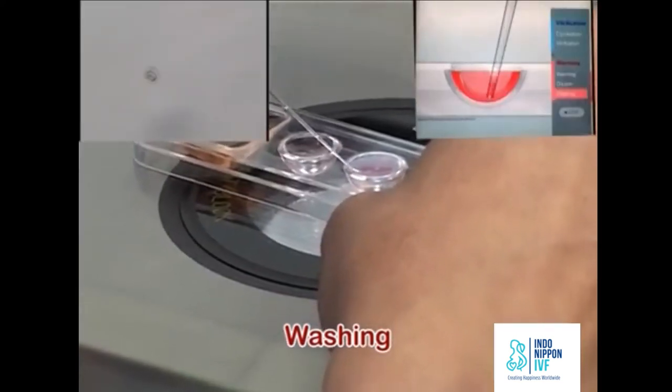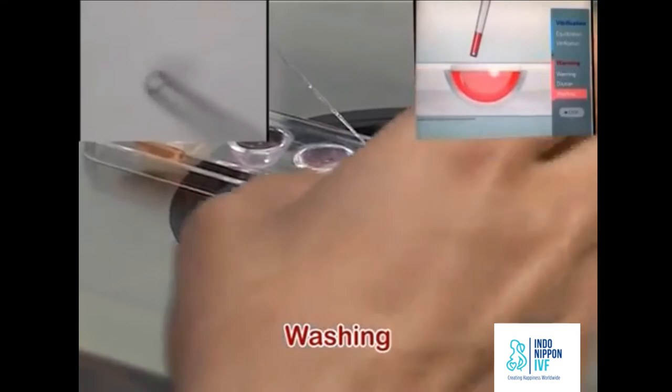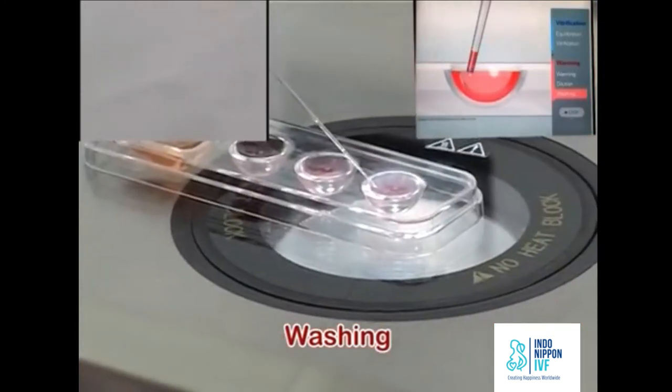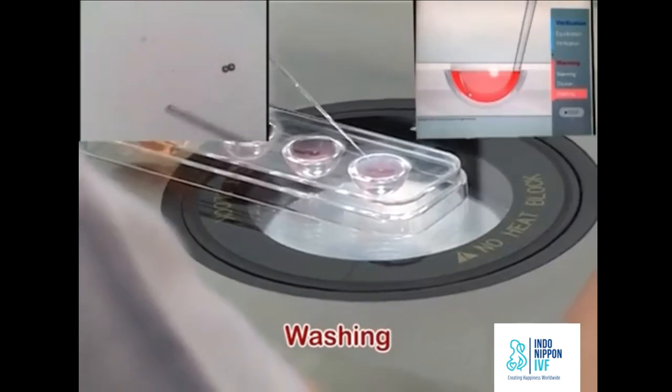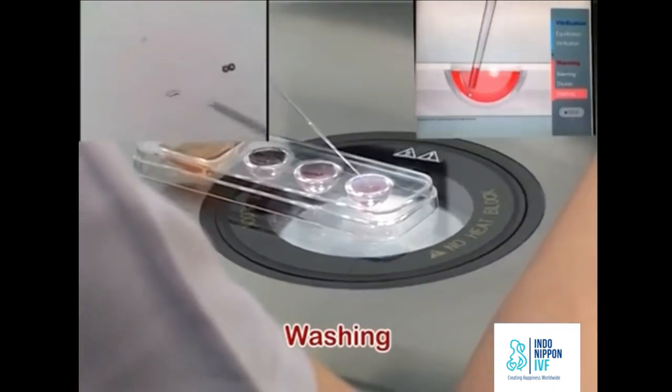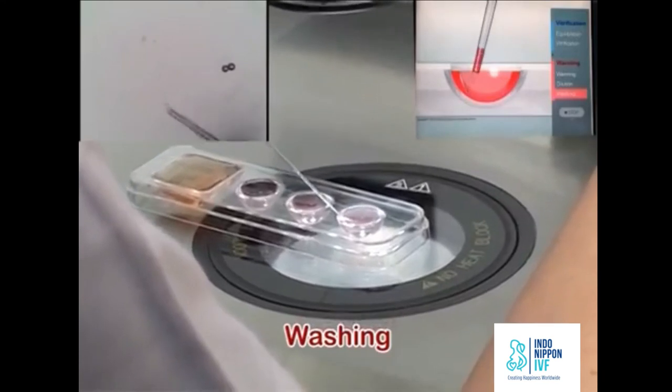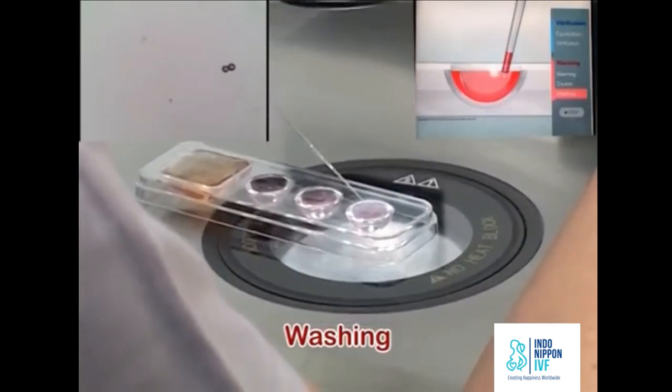Aspirate the oocyte with minimum volume of WS1. Put the oocyte on the surface of the WS2 well. It will free fall to the bottom of the well. Pick up the oocyte from the bottom and let it again free fall from the surface of WS2 well to the bottom, thus washing the oocyte twice.